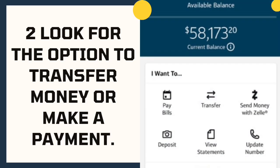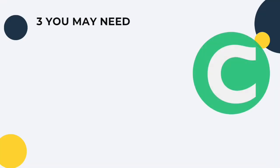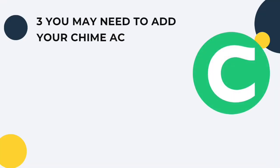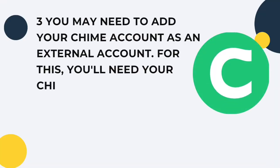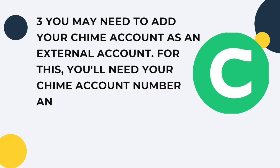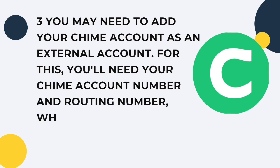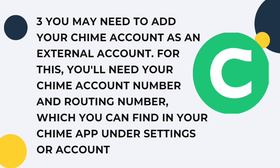Look for the option to transfer money or make a payment — it might be under the Transfers or Payments menu. You may need to add your QIIME account as an external account. For this, you'll need your QIIME account number and routing number, which you can find in your QIIME app under Settings or Account Information.